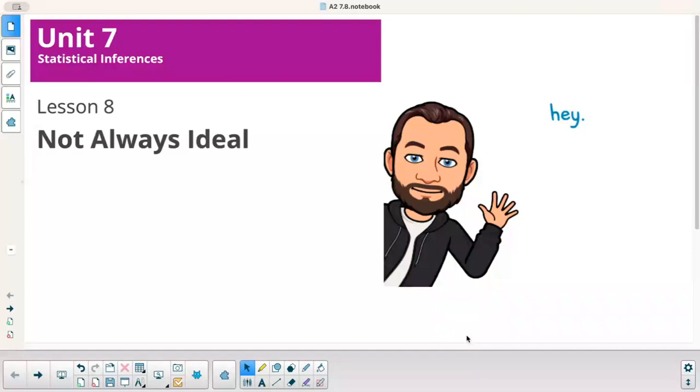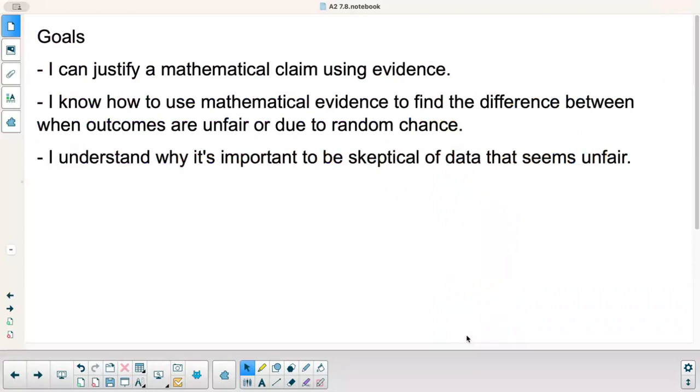Luster to Math, Algebra 2, Unit 7, Lesson 8 is called Not Always Ideal. Goals today: I can justify a mathematical claim using evidence. I know how to use mathematical evidence to find the difference between when outcomes are unfair or due to random chance, and I understand why it's important to be skeptical of data that seems unfair.